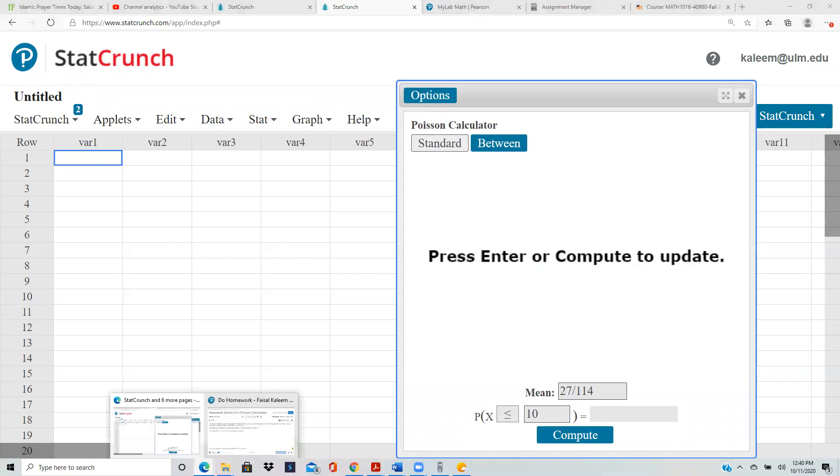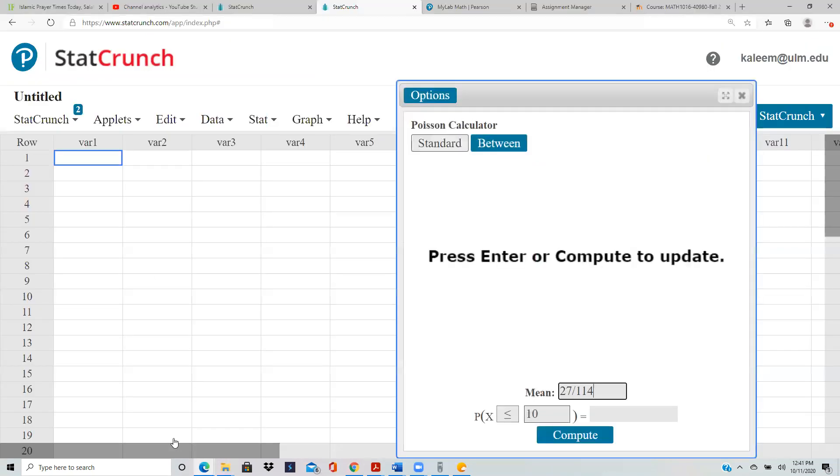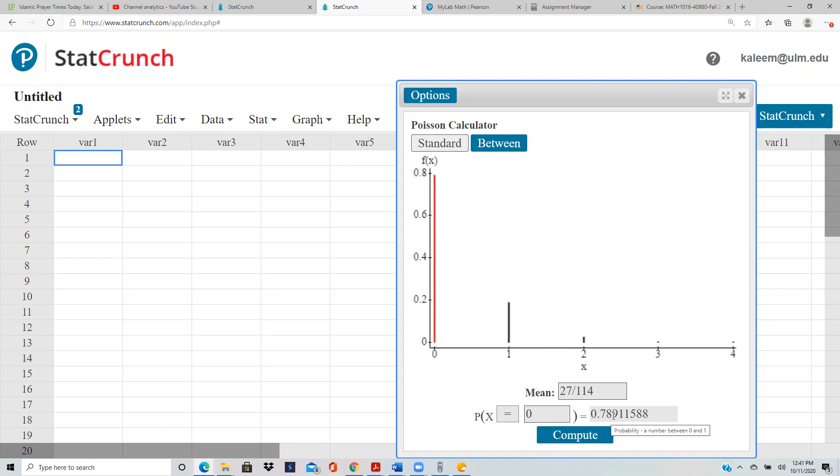What they were asking in the first part was, what's the probability that the state will not be hit by any major hurricanes in a single year? So it means number of hurricanes is zero, not being hit. So x is zero, equal to zero. So 0.7891.